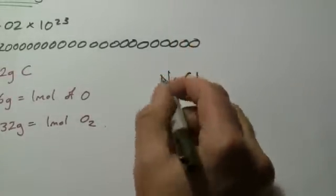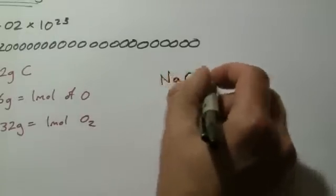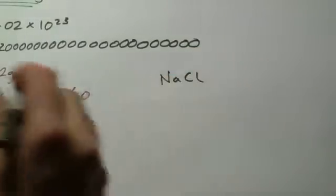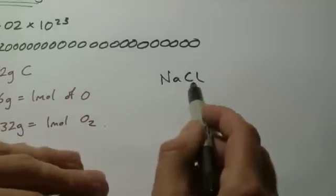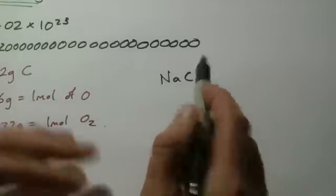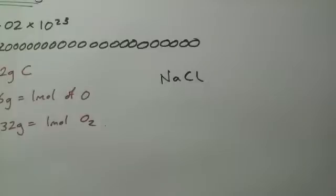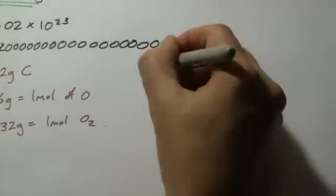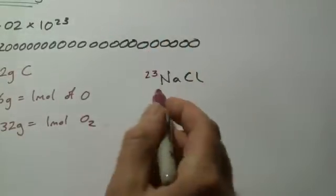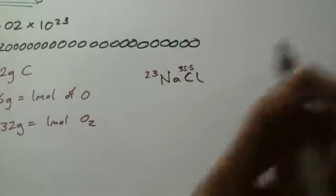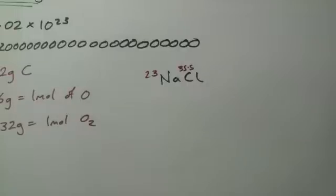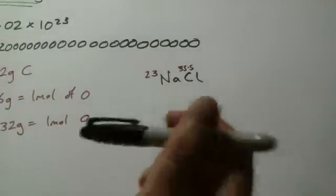First, you'd work out the relative formula mass, which means the relative atomic mass of sodium plus the relative atomic mass of chlorine. If you look these up on the periodic table, sodium has a relative atomic mass of 23 and chlorine has a relative atomic mass of 35.5.